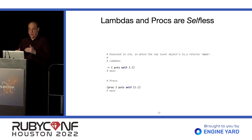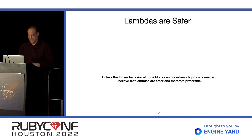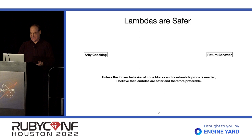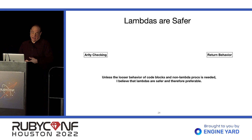Lambdas and Procs are selfless — if you call self inside one, you won't get the Proc instance that the Lambda is; you'll get whatever the enclosing object happens to be. In IRB, the name of the enclosing object is main, so that's why we see that there. Because of the differences in arity checking and return behavior, I believe that Lambdas are preferable. They're safer and more restrictive. If you need that looser behavior, that's fine, but I think we probably rarely do need it.